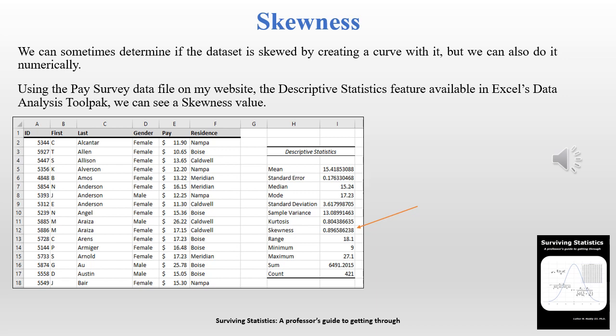I'm using a feature in Excel's Data Analysis ToolPak called Descriptive Statistics with the pay survey data file — the one with 421 values. Looking at the mean and the median, you can see that the mean is slightly higher than the median, which means this is positively skewed. Excel has computed a skewness value of 0.89 — we'll talk about what that means in just a second.